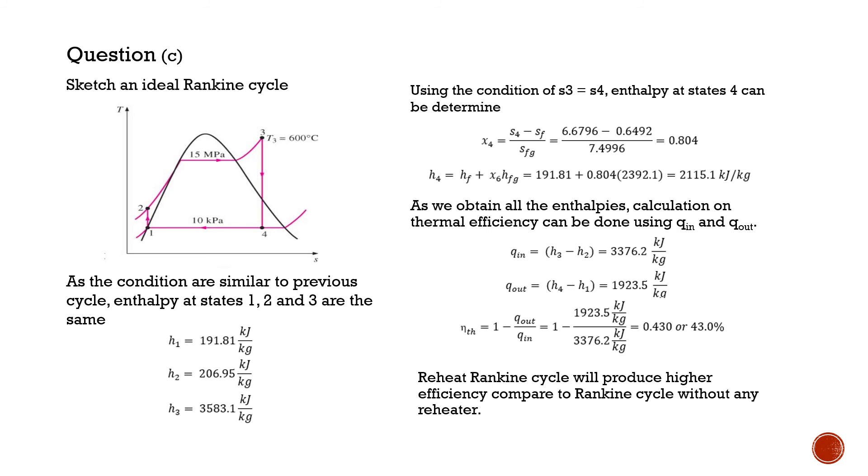And by applying the step in question B to identify the enthalpy at each stage, we can calculate the thermal efficiency and we can obtain the thermal efficiency of the Ideal Rankine Cycle without any reheater is 43%.